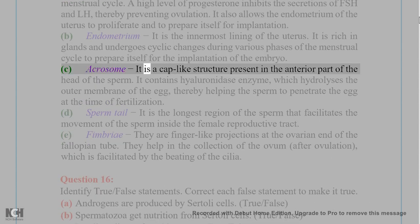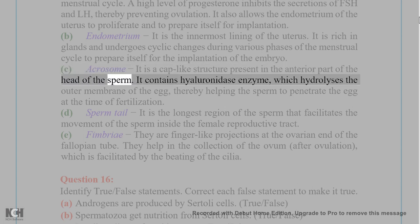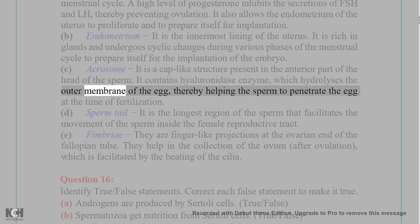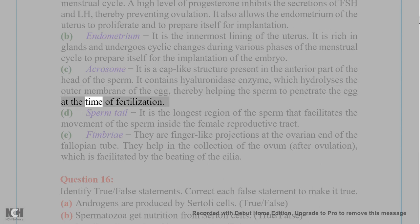C. Acrosome: It is a cap-like structure present in the anterior part of the head of the sperm. It contains hyaluronidase enzyme, which hydrolyses the outer membrane of the egg, thereby helping the sperm to penetrate the egg at the time of fertilization.